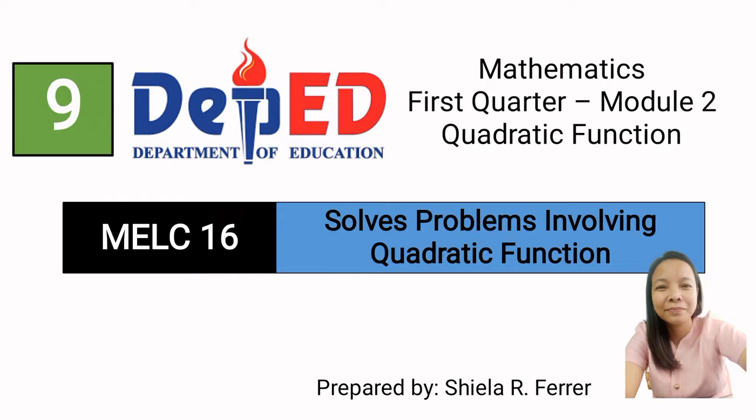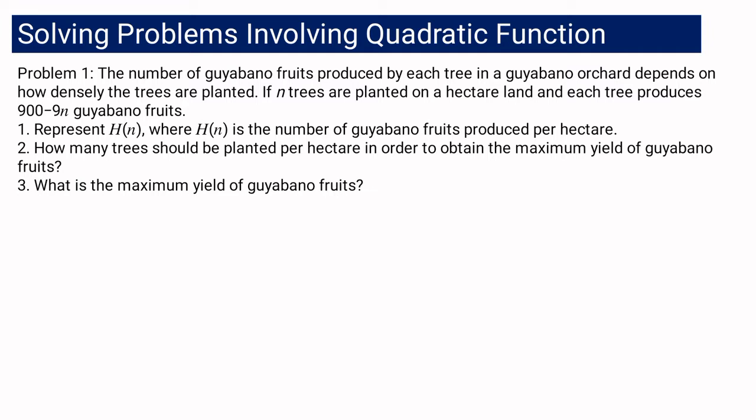Let us proceed with problem number one. The number of guayabano fruits produced by each tree in a guayabano orchard depends on how densely the trees are planted. If n trees are planted on a hectare of land and each tree produces 900 minus 9n guayabano fruits, we will be answering three questions. Number one: represent H of N, wherein H of N is the number of guayabano fruits produced per hectare. Number two: how many trees should be planted per hectare in order to obtain the maximum yield of guayabano fruits? And number three: what is the maximum yield of guayabano fruits?